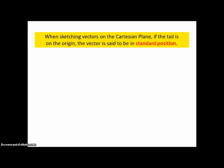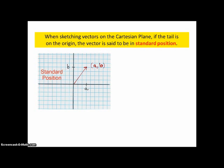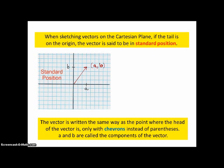When sketching vectors on the Cartesian plane, if the tail is on the origin, the vector is said to be in standard position. And so (a,b) doubles as a point and also as a vector, but the vector is written the same way as the point where the head of the vector is, only with chevrons instead of parentheses.